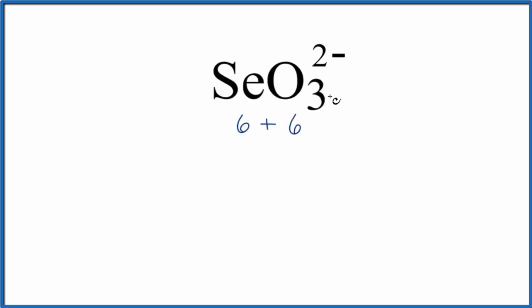Oxygen, same group, six valence electrons. We have three oxygen atoms. And then this 2- up here, that means we have two additional electrons. So we'll just add two for a total of 26 valence electrons for SeO3 2-.